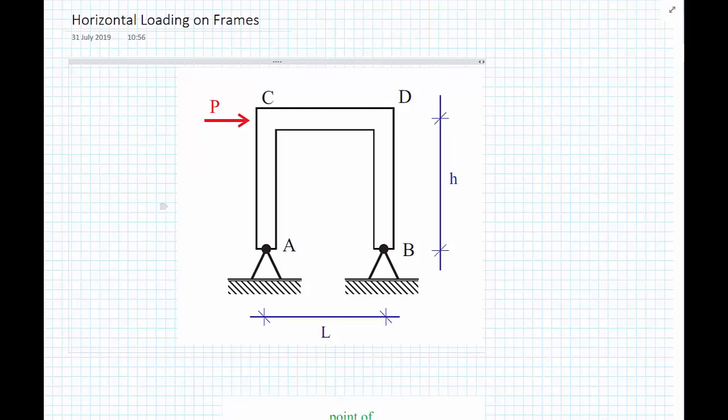The problem we have with this structure is we have four support conditions, two at A and two at B, but we can only have three independent equations of equilibrium in two dimensions. So we need to see if there's some judgment we can make about this structure where we can reduce this to a statically determinate structure or a series of statically determinate structures.